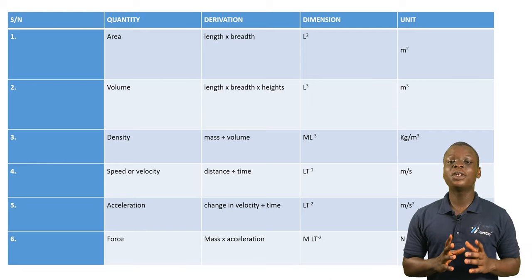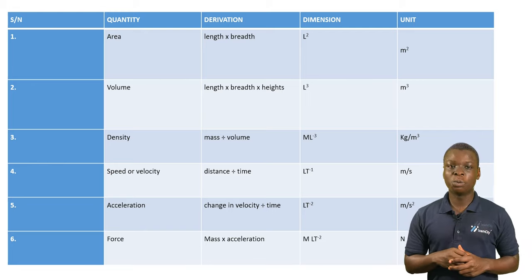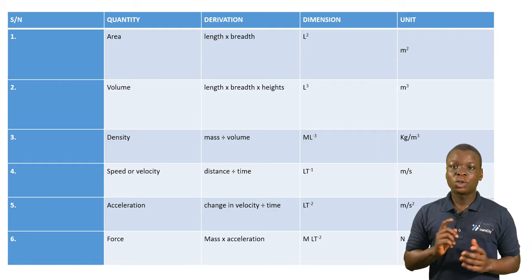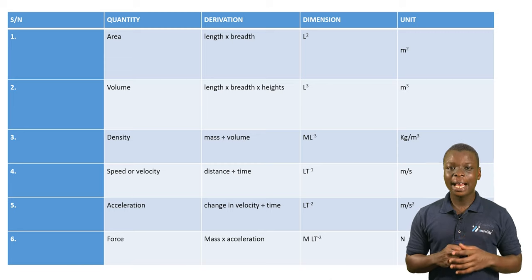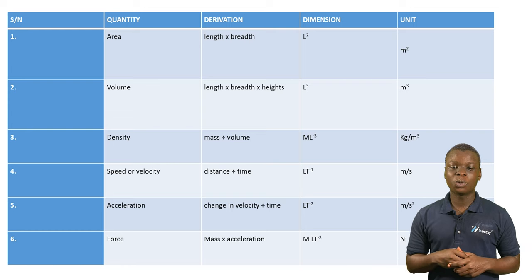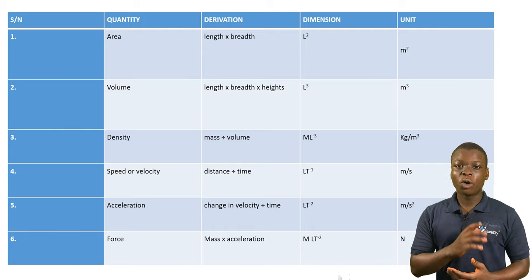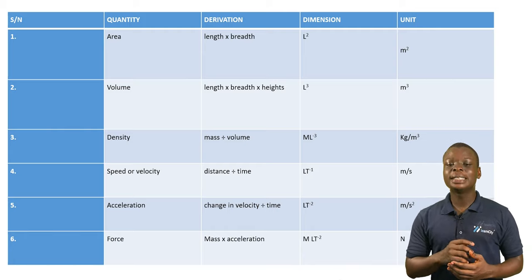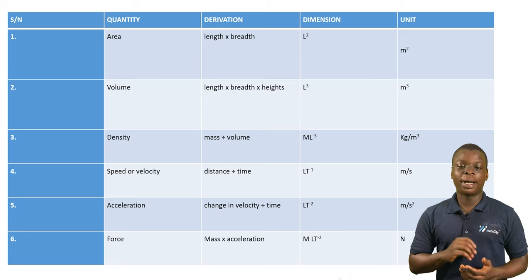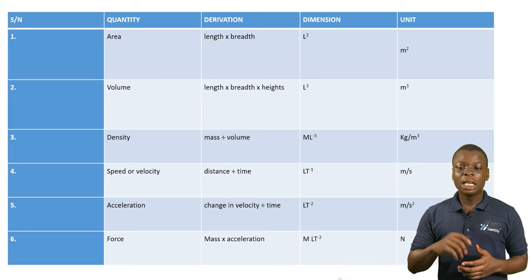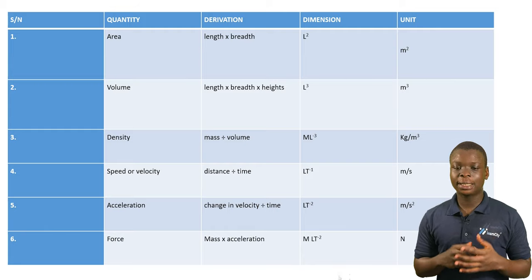For density, the derivation is mass divided by volume. Since volume is L cubed, mass is represented with M. So the dimension for density is ML raised to power minus 3, and it is measured in kg per m cubed. Next up is speed or velocity. The derivation or formula for speed or velocity is distance divided by time. The dimension is therefore LT raised to power minus 1, and speed or velocity is measured in meters per second.